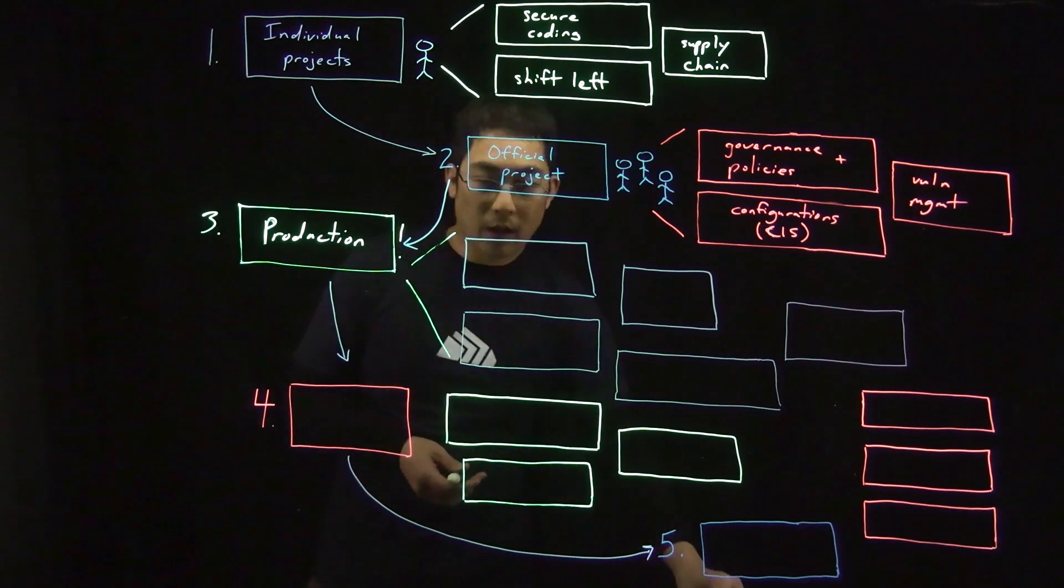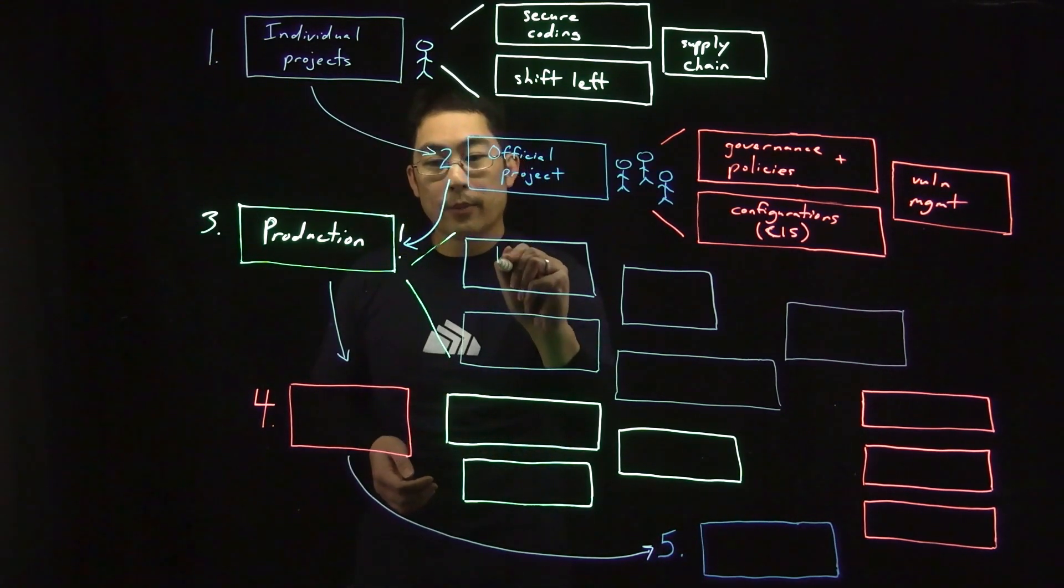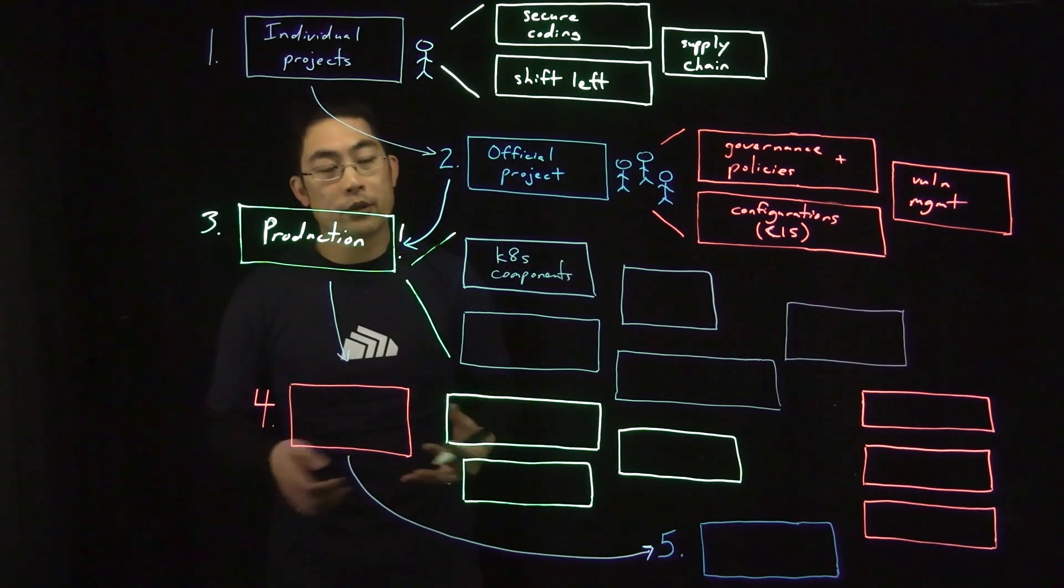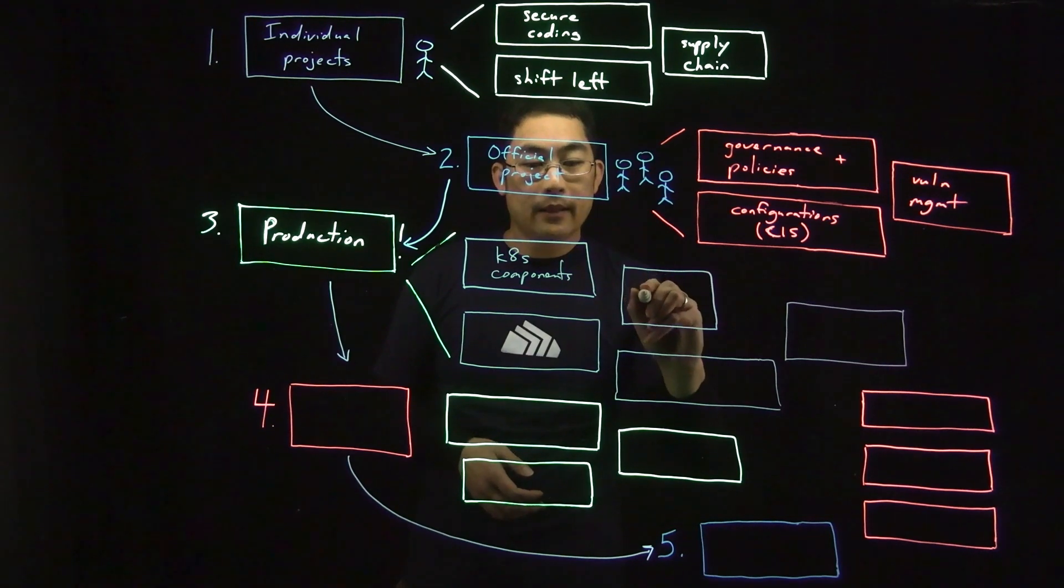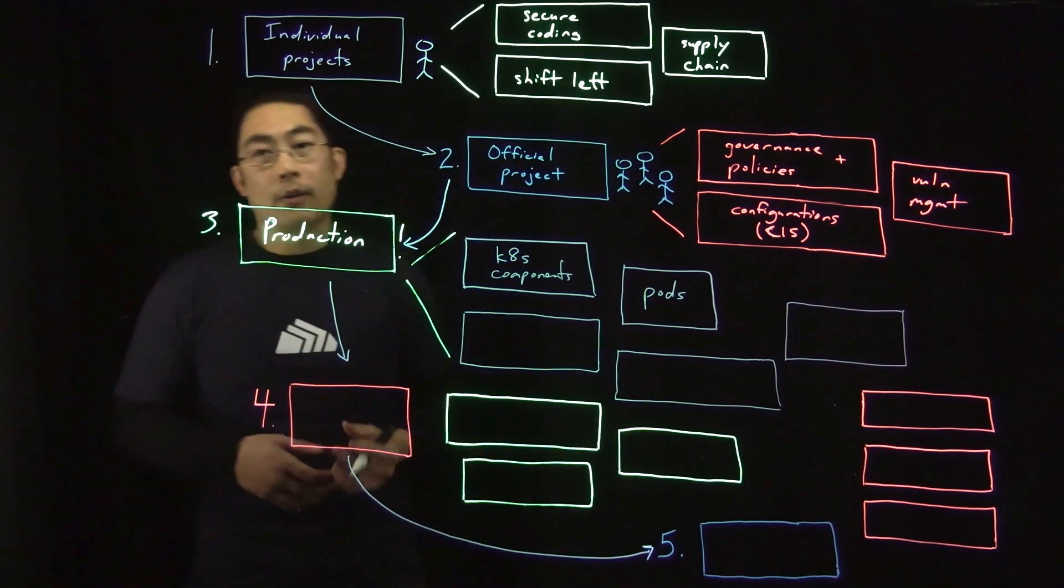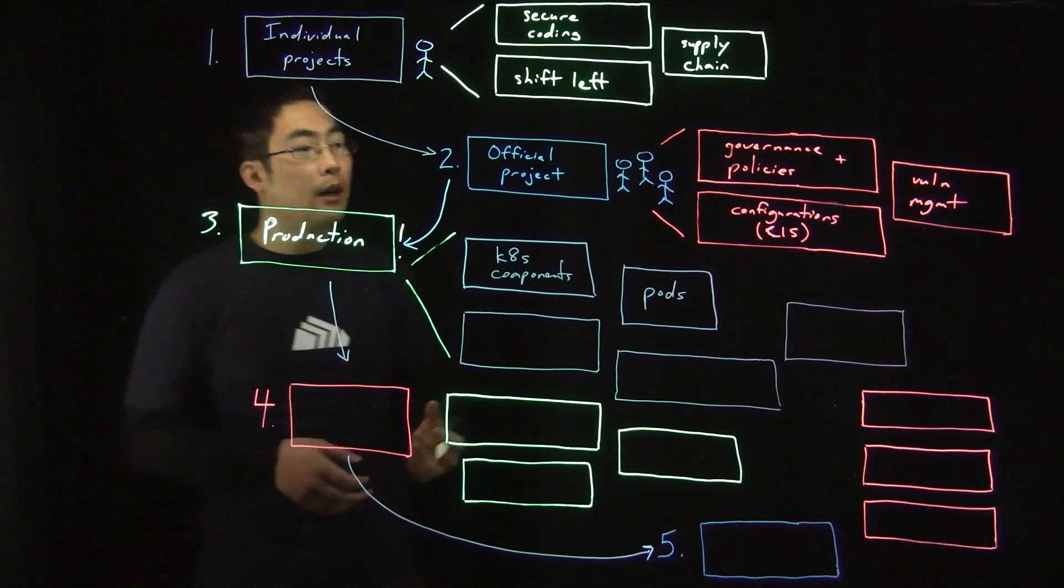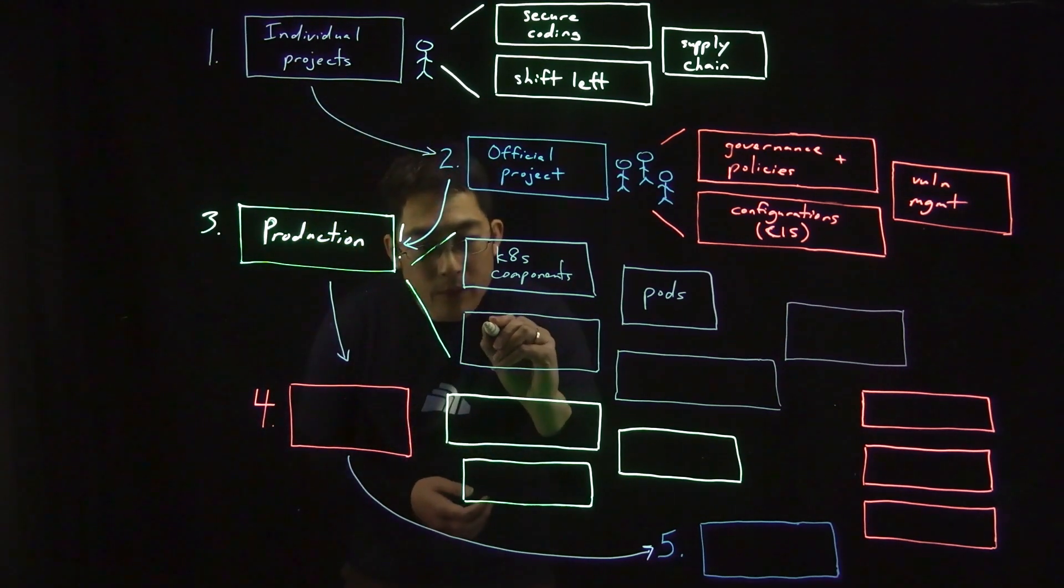First, you want to think about Kubernetes components and any vulnerabilities that they may contain. These are things like the control plane and node components you want to ensure are well protected. You want to think about appropriate isolation between your workloads, but you also want to think at a pod level, about privileges that are granted to pods and what they're able to do within a cluster.